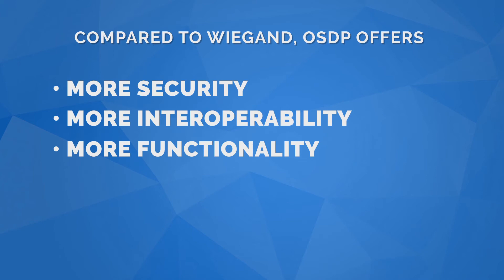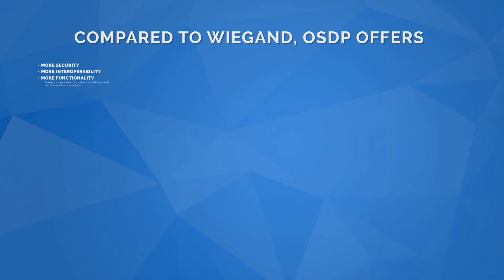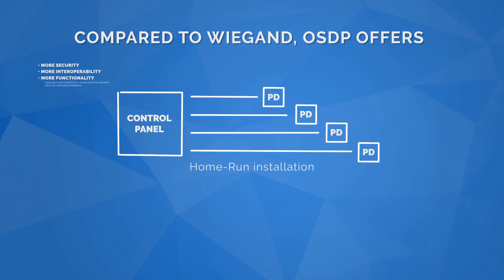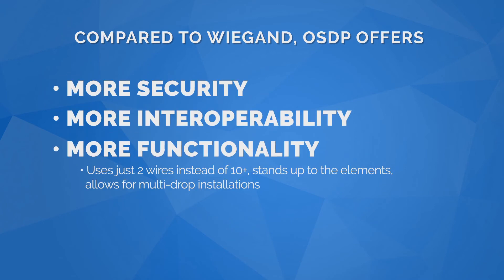More functionality. OSDP uses just two wires instead of 10+. OSDP stands up to the elements, even in places such as ski resorts. And installations are easier, since instead of the traditional home run scheme, multi-drop installation can be used for readers and devices, saving time and money.